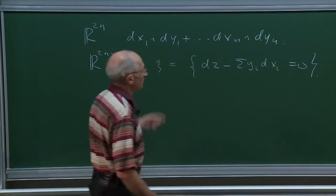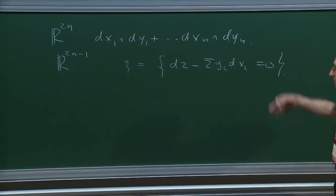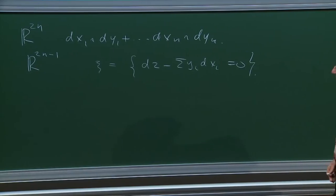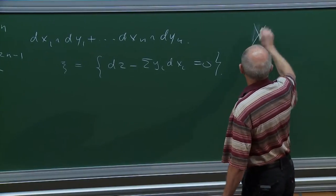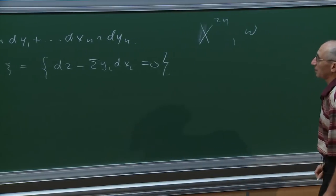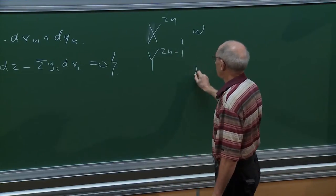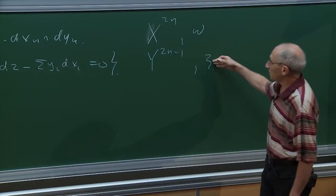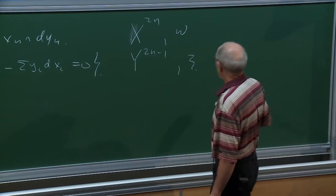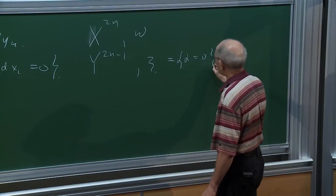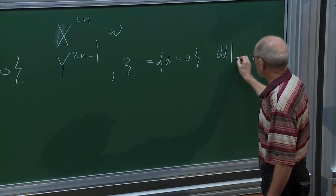According to Darboux's theorem, a symplectic manifold is a manifold with a closed maximum-rank two-form, and similarly a contact manifold is an odd-dimensional manifold with a completely non-integrable plane field. The complete non-integrability means that locally, by Frobenius condition, this is defined by a one-form, or globally by a one-form with a twisted coefficient, such that d-alpha restricted to xi is symplectic.